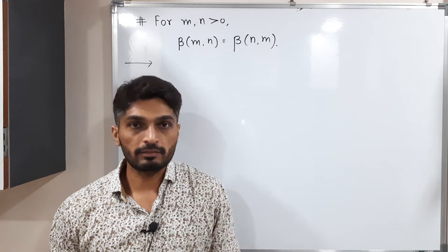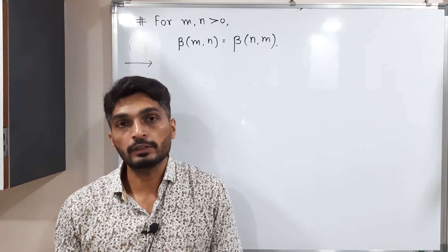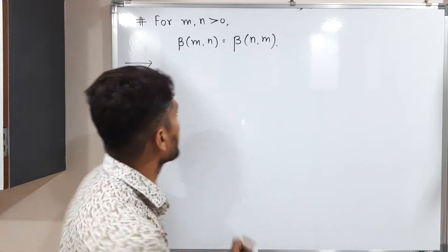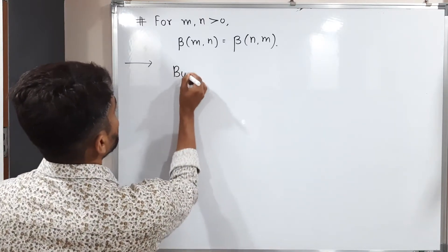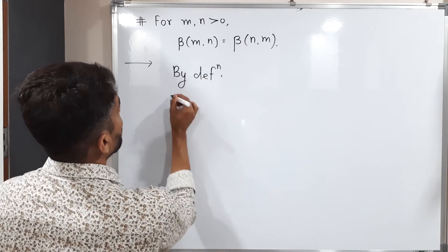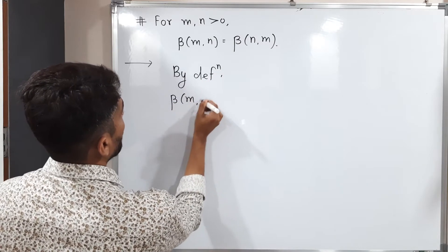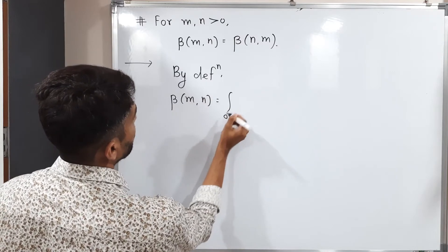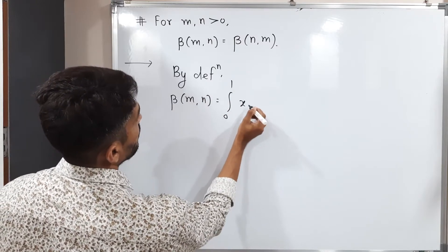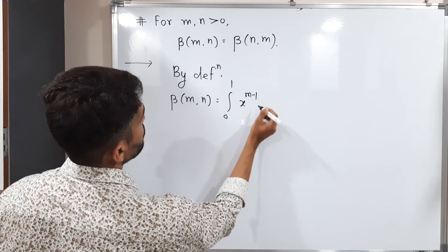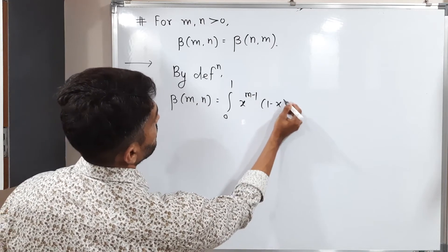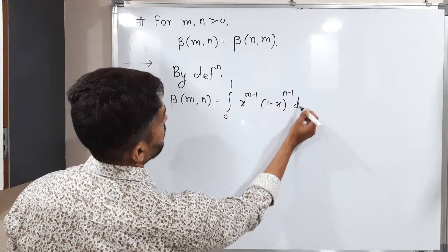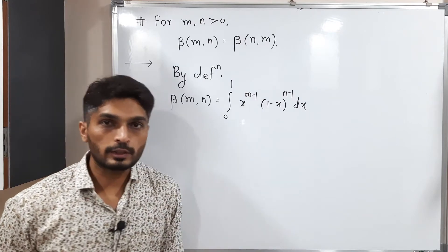We will start with left hand side. I am going to use definition of beta function. By definition, beta of mn: You are familiar with the definition of beta function, integration 0 to 1, x raise to m minus 1, 1 minus x raise to n minus 1, dx. So this is the definition of beta function.